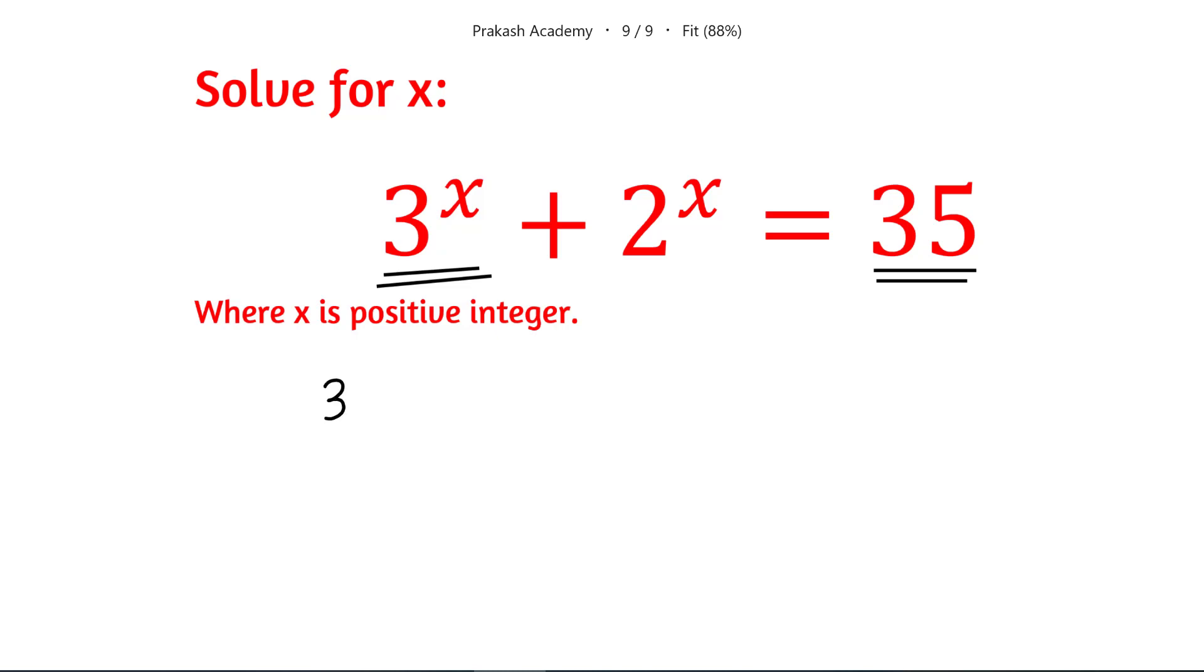If you see X is equal to 1, so 3 raised to the power 1 will be 3, 3 raised to the power 2 will be 9, 3 raised to the power 3 will be 27, and 3 raised to the power 4, that is 27 times 3, that is 81.